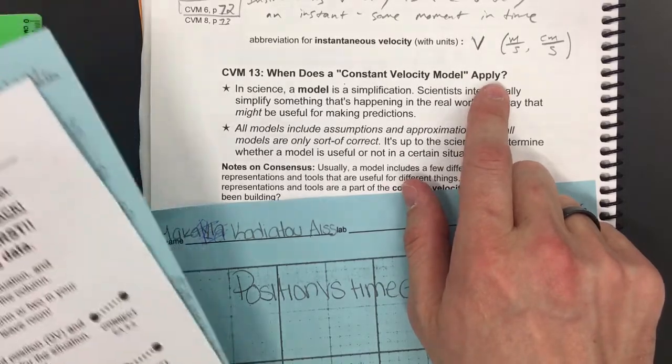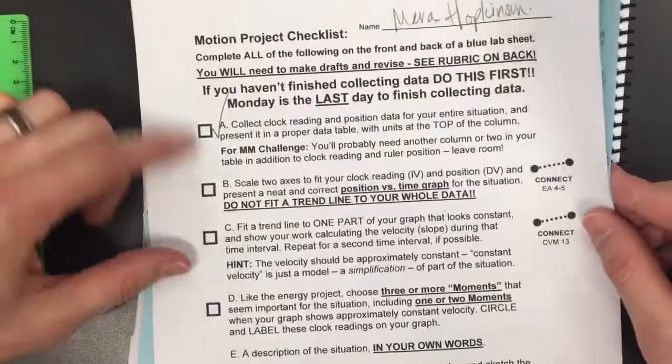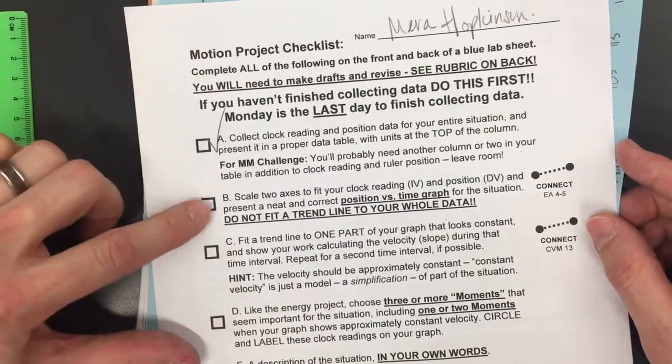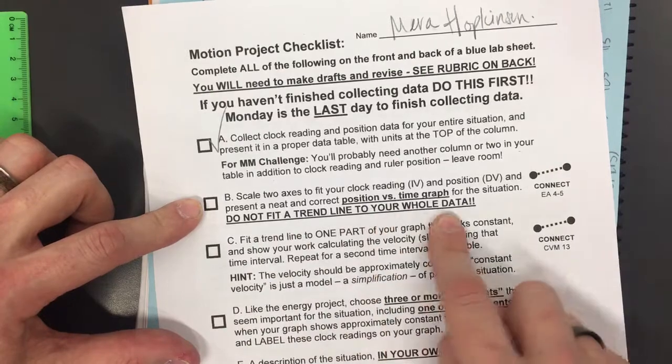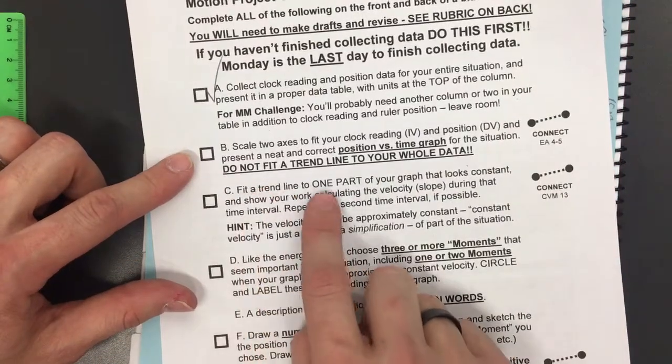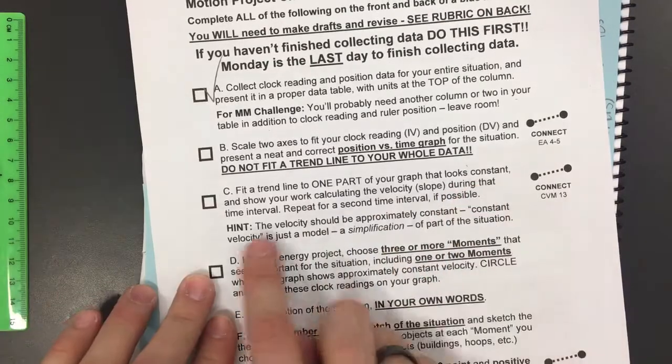I want to point out before we go through this that this is directly relevant to part C of the motion project checklist. That is, after you make your graph, this says: do not fit a trend line to your whole data.